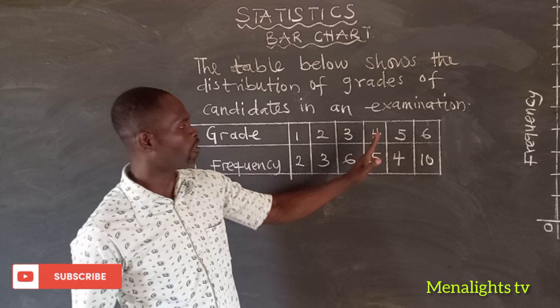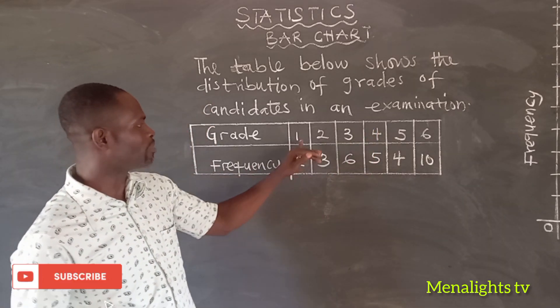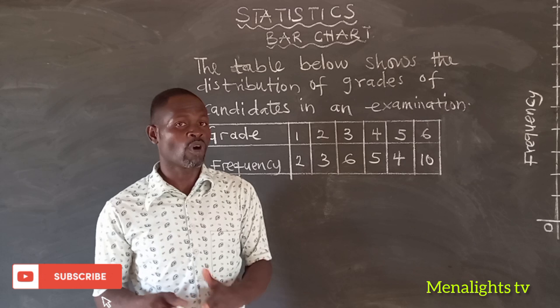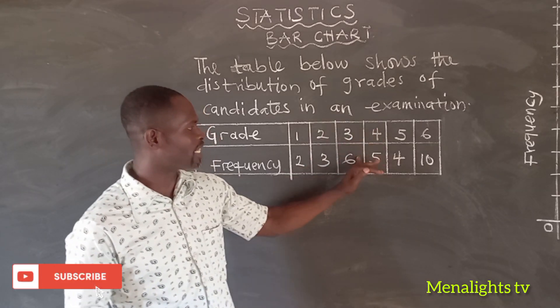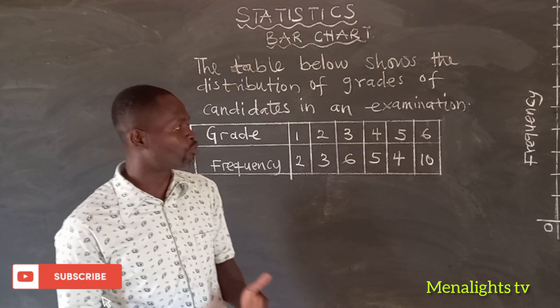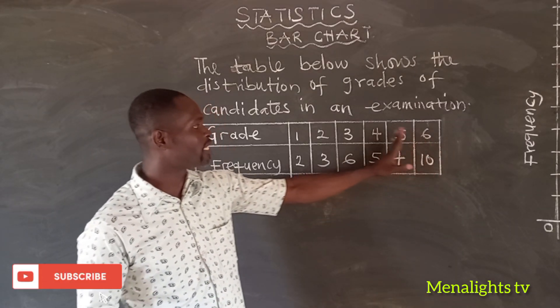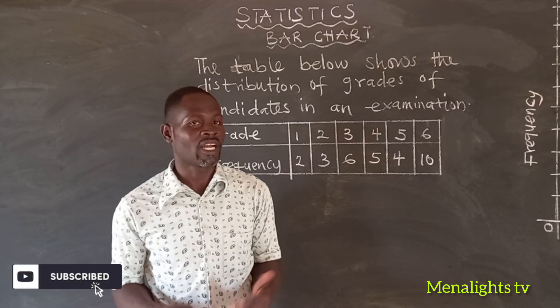We have grades 1, 2, 3, 4, 5, and 6. The frequency: grade 1, only 2 people obtain grade 1. Grade 2, 3. Grade 3, 6. Grade 4, 5. Grade 5, 4. And grade 6, 10 students. So we are now going to use this information or data to draw a bar chart.